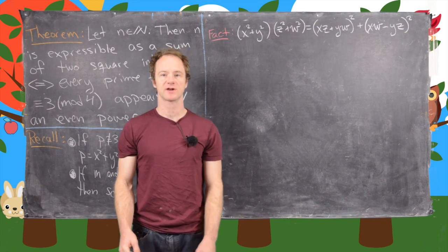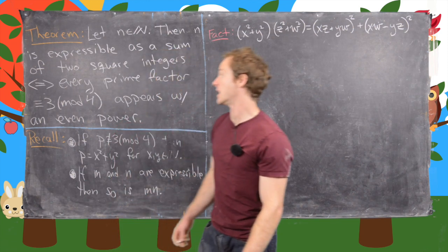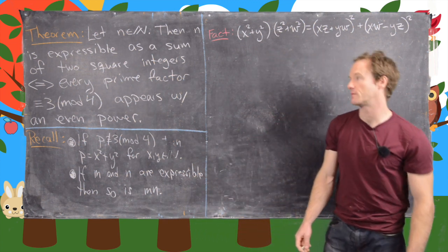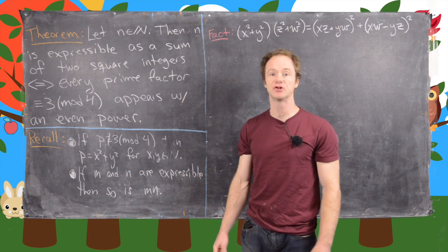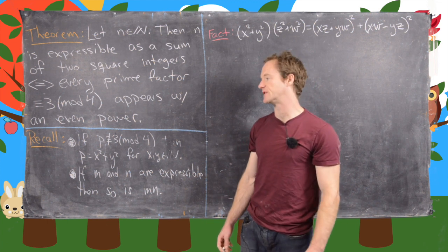This is the fourth in a series of videos talking about when n, a natural number, is expressible as the sum of squares. All of these videos have been focused on when n is expressible as the sum of two squares, and this is the last of these videos.